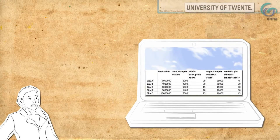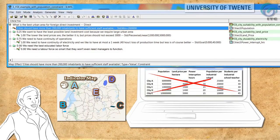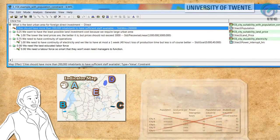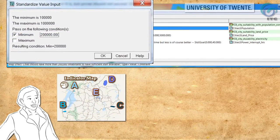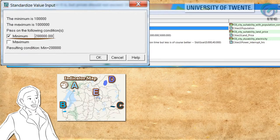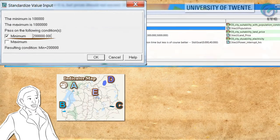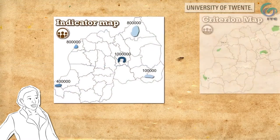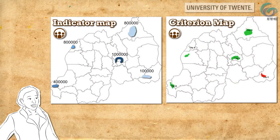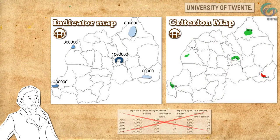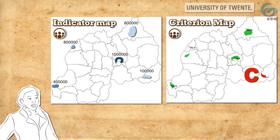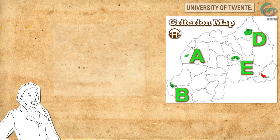Let's continue, but this time we will not be using a spreadsheet. The investor wants cities with at least 200,000 people for a good labour market. With ILWIS, you can exclude cities that do not meet this criterion on maps instead of tables. City C has now become unsuitable because the population is too small — just four cities left.